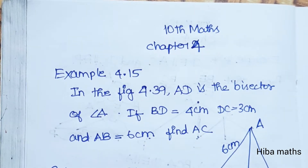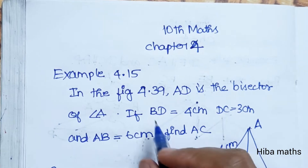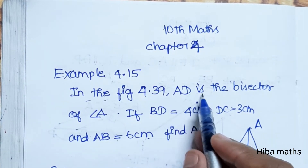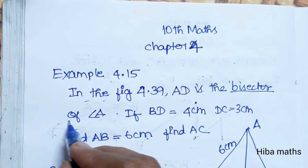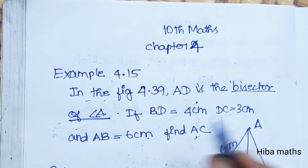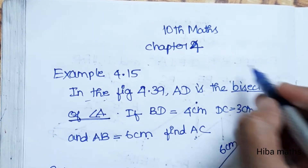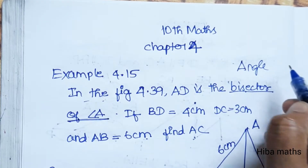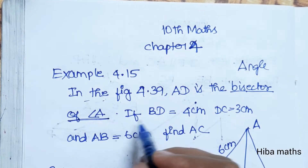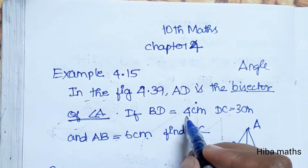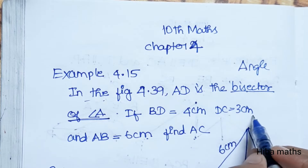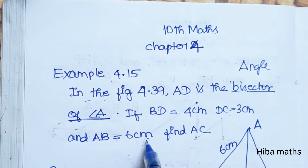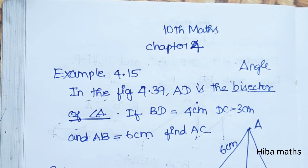In figure 4.39, AD is the bisector of angle A. By the angle bisector theorem, if DB is equal to 4cm, DC is equal to 3cm, and AB is equal to 6cm, find AC.